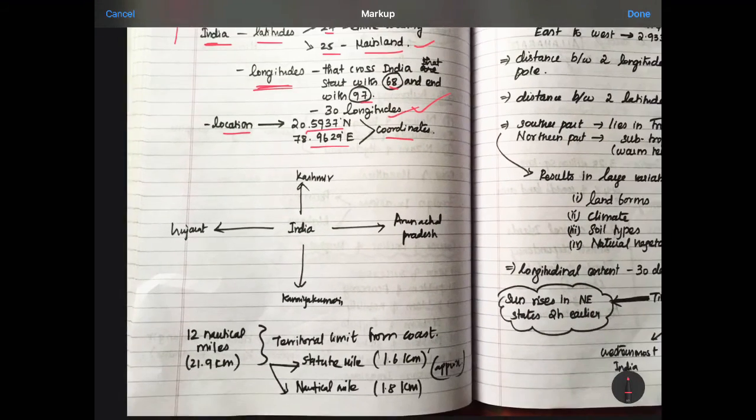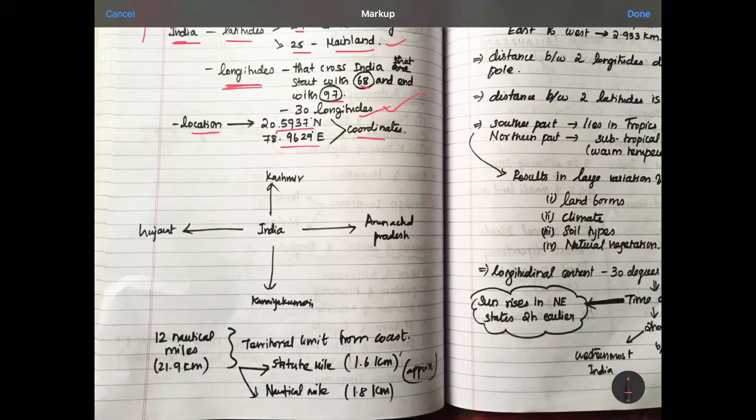First one, let us see certain facts. The northernmost part of India is Kashmir, and the southernmost part of India is Kanyakumari. And the easternmost part is Arunachal Pradesh, and the westernmost part is Gujarat.